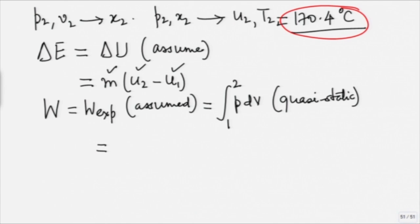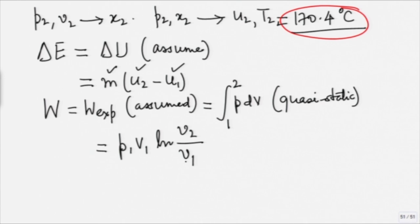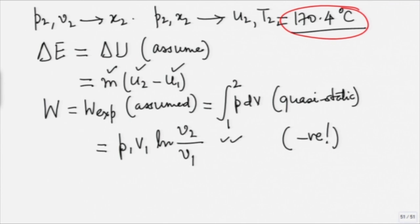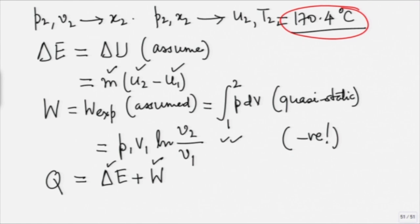This work value can be calculated. Notice it will be negative because V₂ is smaller than V₁ — it is compression. Heat Q should always be calculated as ΔE + W. We have determined ΔE and W, so Q can be determined. That is the procedure.